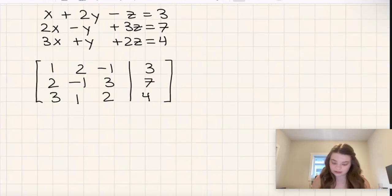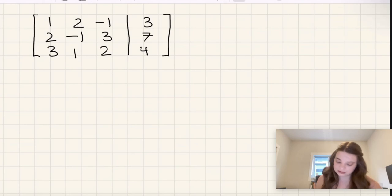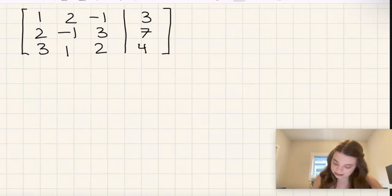Now how am I going to do that? If I multiply the first equation by 2 and then subtract the second equation, we can get a 0 there. And then for getting rid of the 3, if I multiply the first equation by 3 and then subtract the third equation, then I will get 0 there as well. So let's do both of those things.